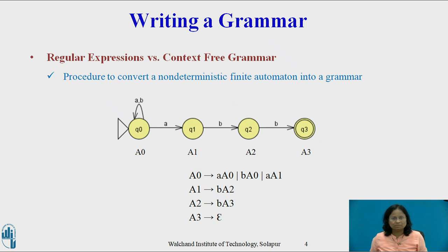Consider the non-deterministic finite automata given below. There are four states in the given NFA, so create four non-terminal symbols A0, A1, A2, and A3 corresponding to Q0, Q1, Q2, and Q3. State Q0 has transitions to state Q0 on symbols a and b, and a transition to state Q1 on symbol a.